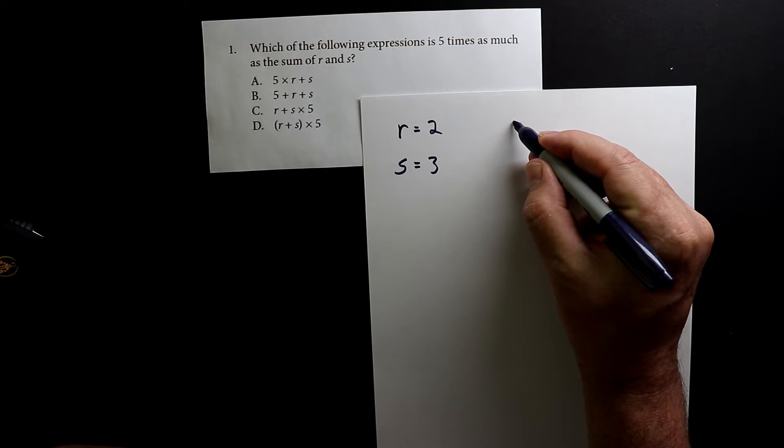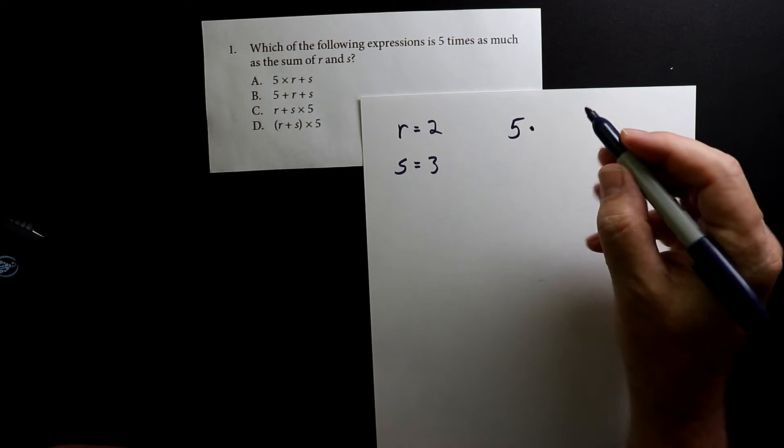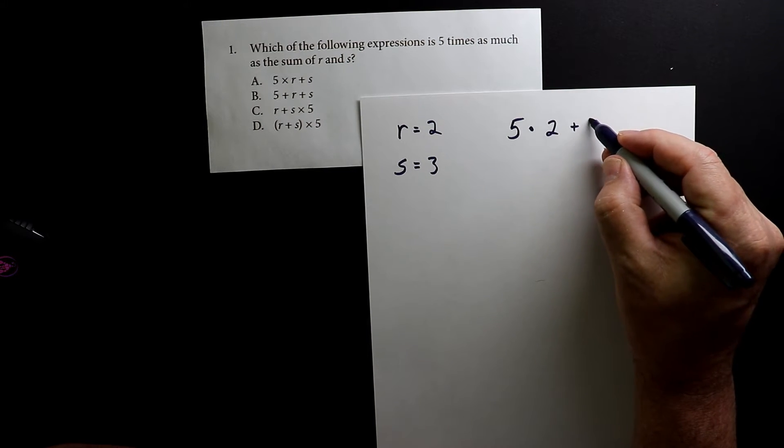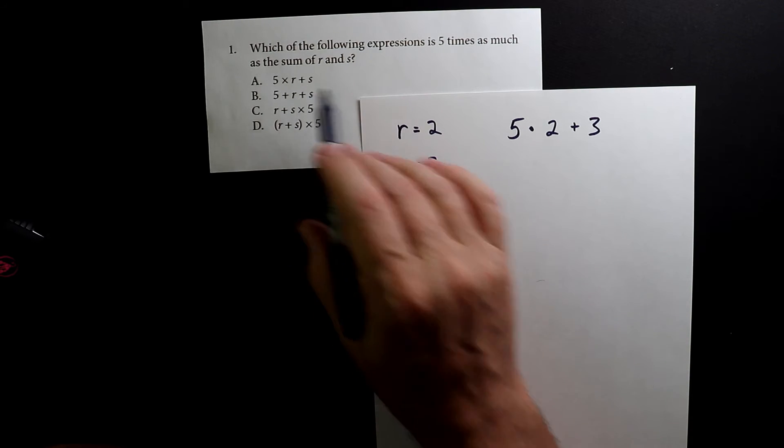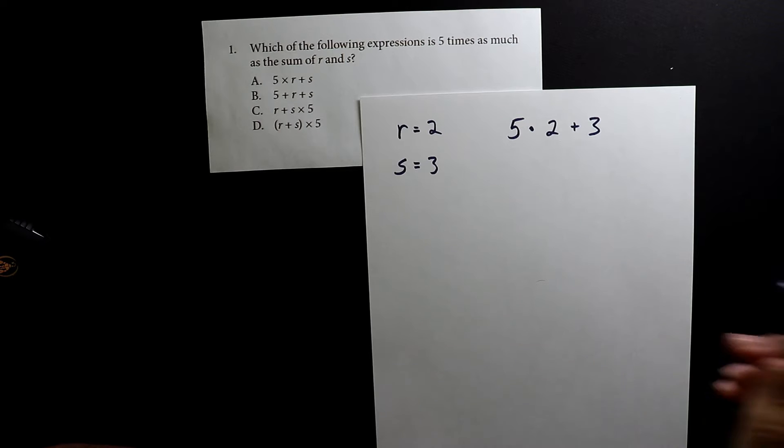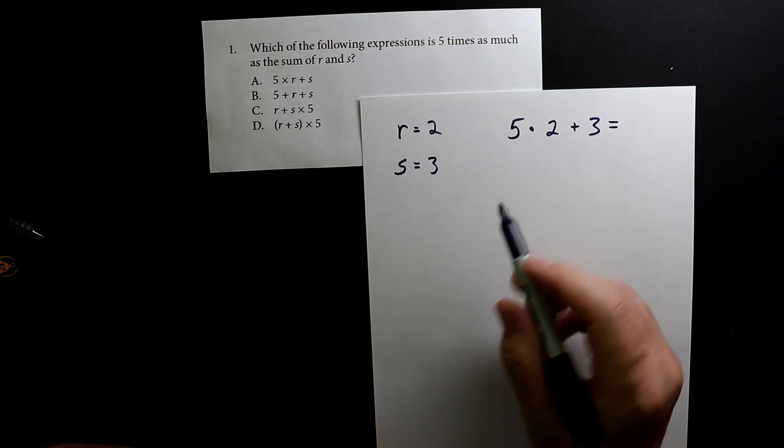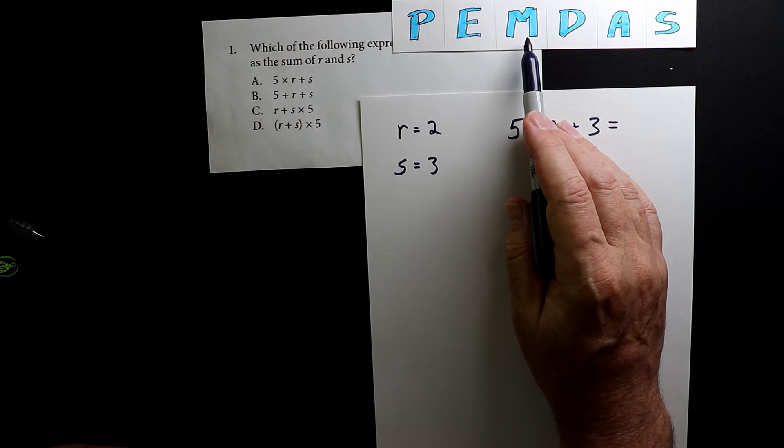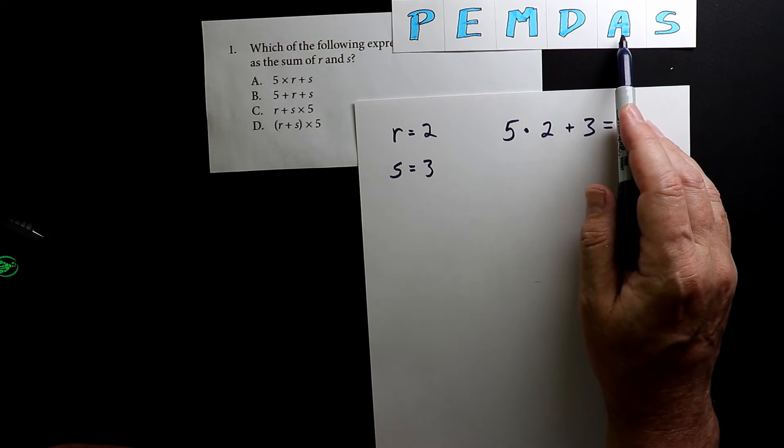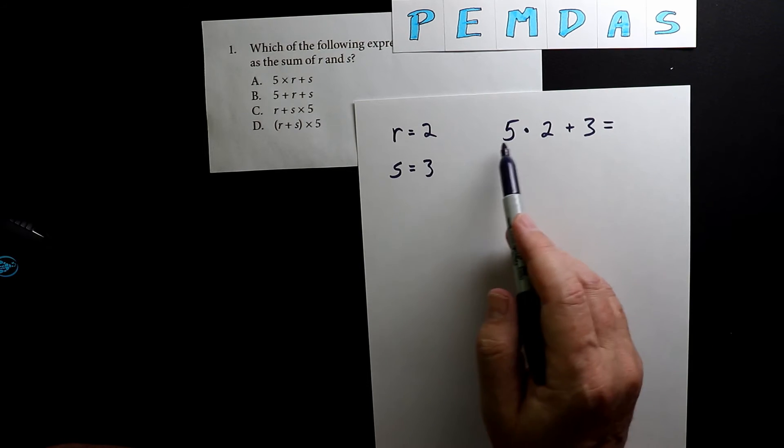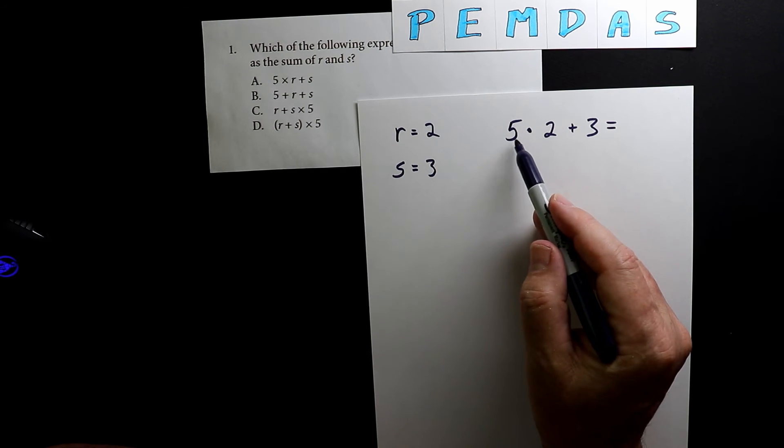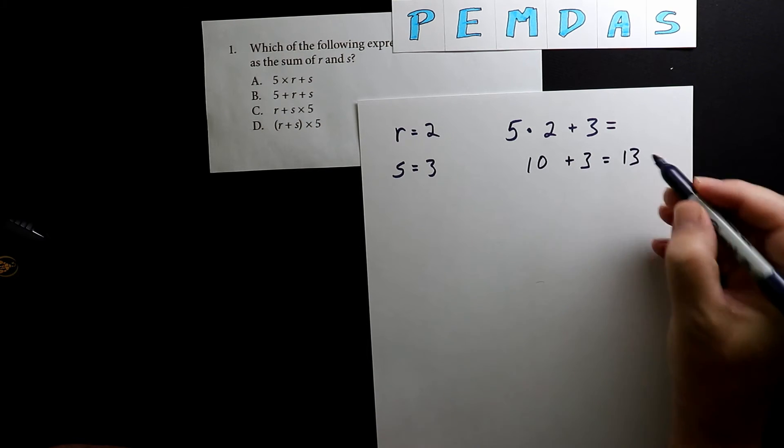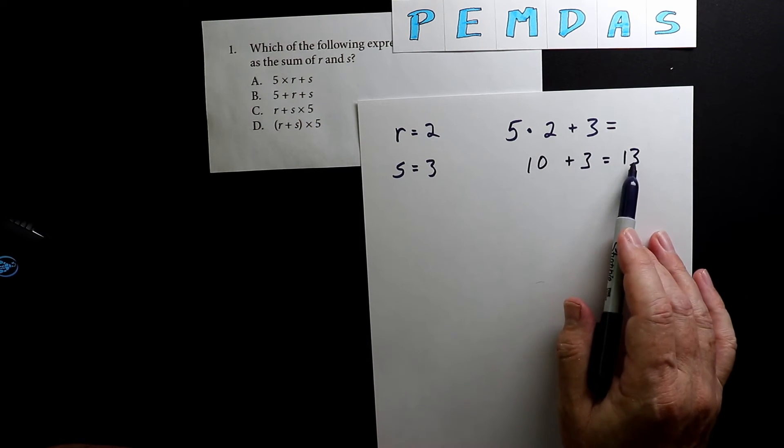The first one is five times r, which was 2, plus 3, because s equals 3. Using the order of operations, M stands for multiplication and A stands for addition. Since multiplication comes before addition, we do that first. Five times 2 is 10, plus 3 equals 13.